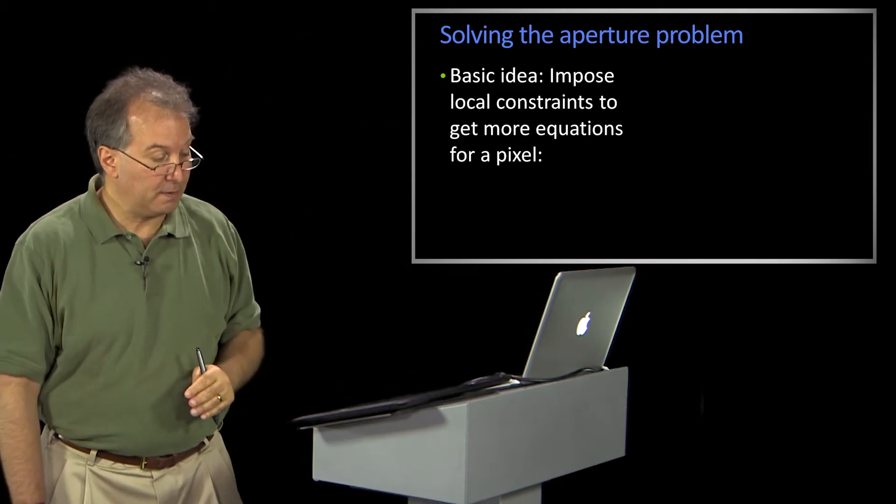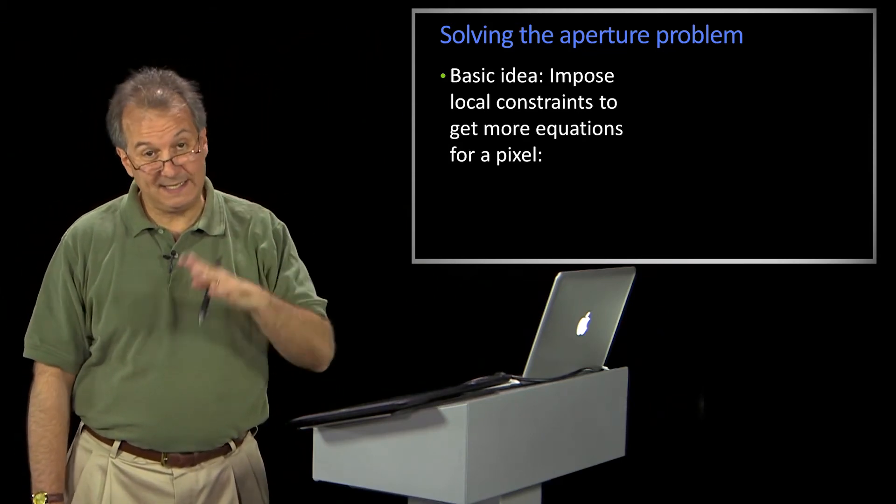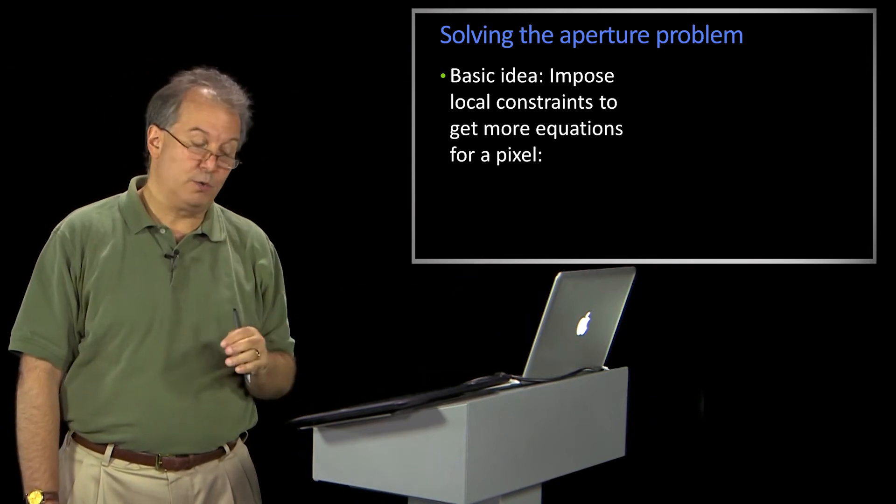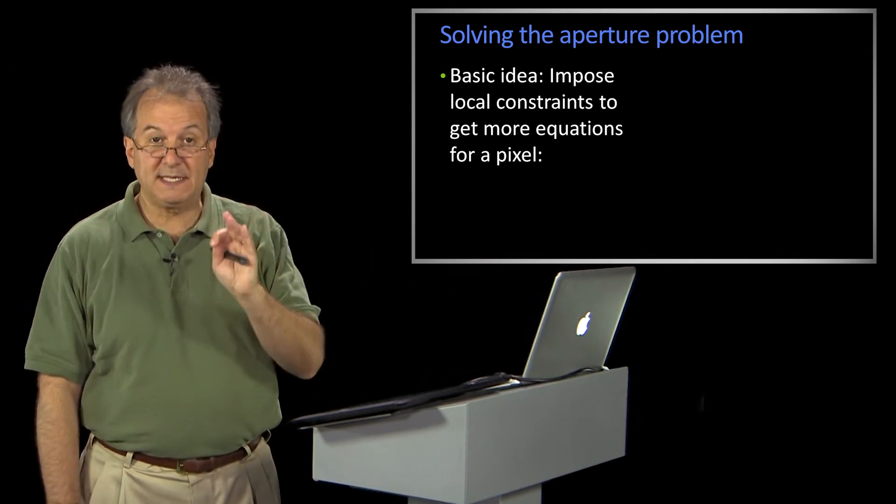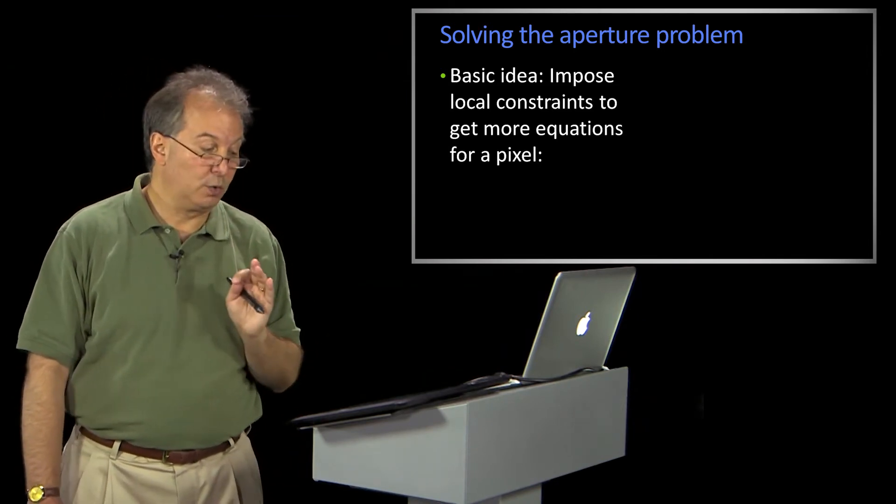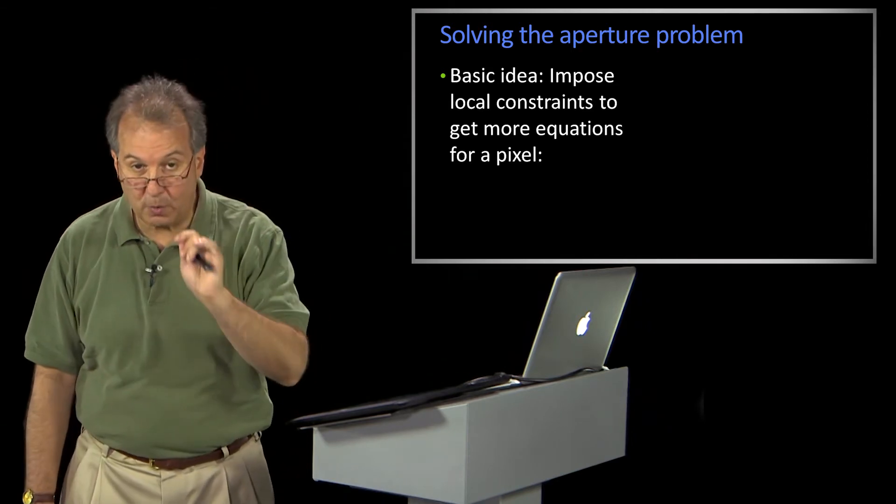So how are we going to solve the aperture problem? Well, the basic idea is the same as before. We have to impose some sort of constraints, but this time we're going to impose some local constraints to get more equations per pixel.